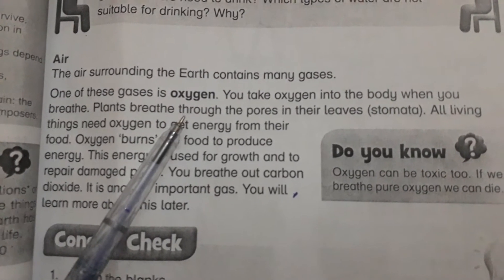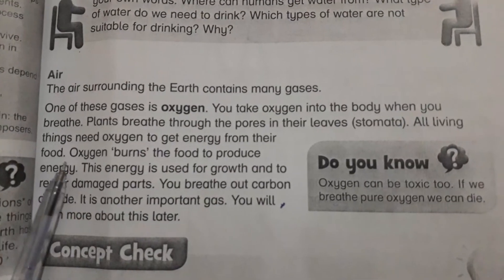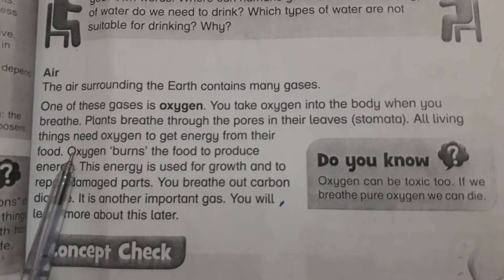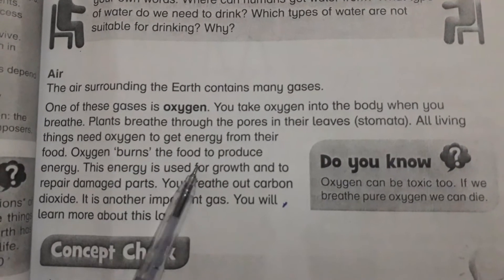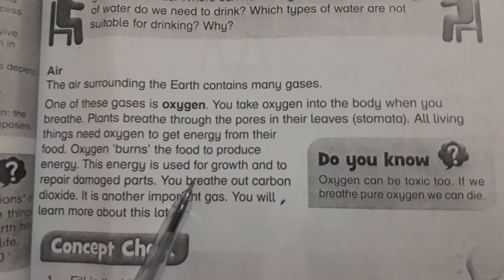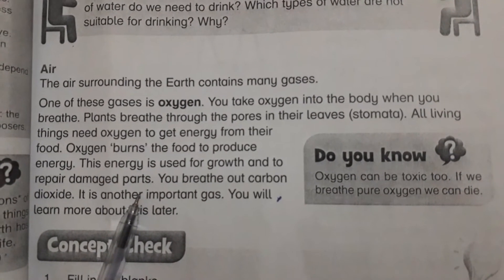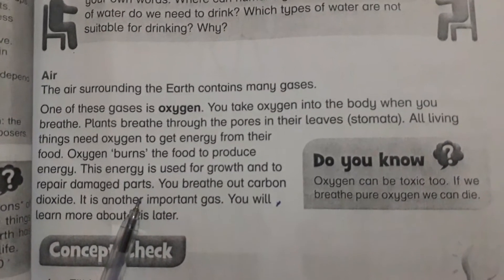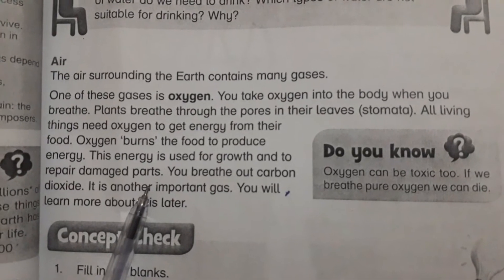Plants breathe through the pores in their leaves called stomata. All living things need oxygen so they can produce their own food energy. Oxygen burns the food to produce energy. This energy is used for growth and to repair damaged body parts — whether animal, plant, or human. It also helps in the growth of red blood cells.